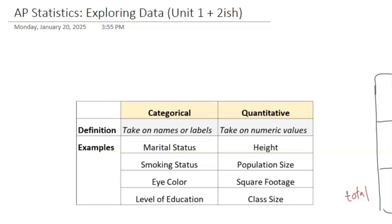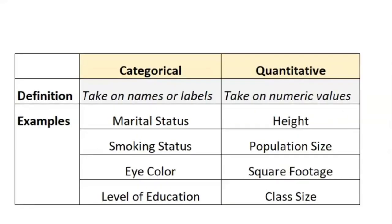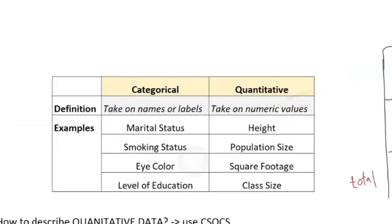Let's tackle everything you need to know for AP Statistics Unit 1, starting with the difference between categorical and quantitative data. Quantitative data deals with numbers - think quantity, numbers - that's stuff like heights, class size, population size, anything you put a number on. Categorical stuff is like names and labels, so think like eye color, hair color, you can't put a number on that.